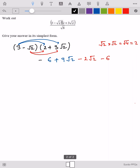You can simplify this. 6 minus 6 get cancelled to 0. 9 root 2 take away 2 root 2 is 7 square root 2.